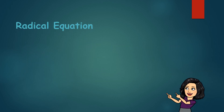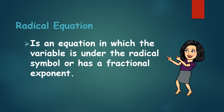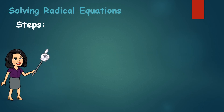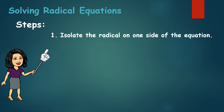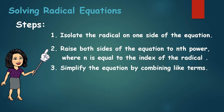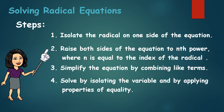A radical equation is an equation in which the variable is under the radical symbol as a fractional exponent. Here are the steps in solving radical equations: isolate the radical on one side of the equation; place both sides of the equation to the nth power, where n is equal to the index of the radical; simplify the equation by combining like terms, and solve by isolating the variable and by applying properties of equality.